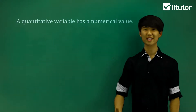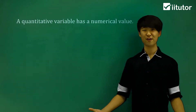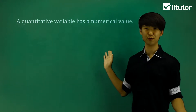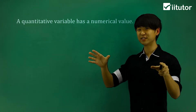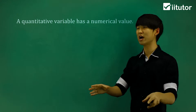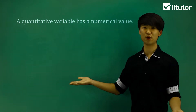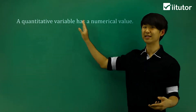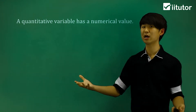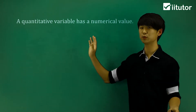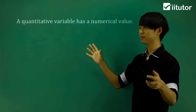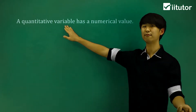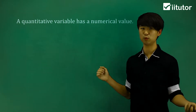We're going to be looking at quantitative variables. A quantitative variable has a numerical value — we can assign some set number to describe it as a quantitative variable. As opposed to this, we can have something that doesn't have a numerical value, which we describe as being categorical, which we'll look at some examples of later on. Things that do have a numerical value are what we call a quantitative variable.